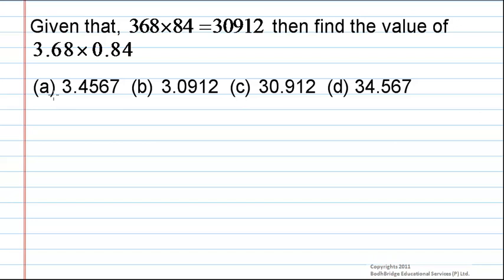The options are 3.4567, 3.0912, 30.912, or 34.567. It is given that 368 into 84 is equal to 30912.